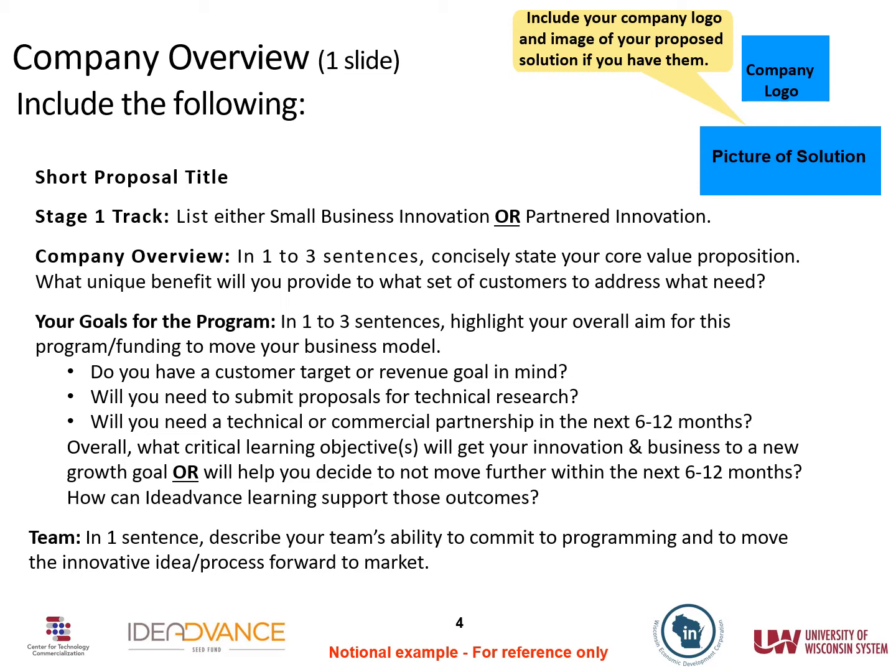The first slide is your first impression, like your 30-second elevator pitch. It gives reviewers a quick preview before you elaborate in later slides. We want four things: 1) which Stage 1 track you're applying for — Small Business Innovation or Partnered Innovation; 2) a brief company or product overview — what benefits you're offering to what customers to address what needs; 3) your goals for the program, listing a few bullet points on initial business model hurdles you want to clear in the next 6–12 months; and 4) your team — convince reviewers you have a motivated team able to put the time in to get the most out of IDEA Advance. You might find it easier to create the more detailed slides first, then come back and summarize the highlights for this slide.